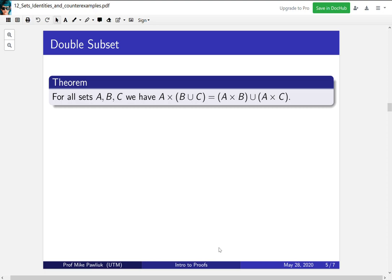Okay, enough with false ones, let's look at true ones. So let's see an example of a double subset proof of the following theorem. For all sets A, B, C we have that A × (B ∪ C) = (A × B) ∪ (A × C). So before we get into the proof of this, this theorem is saying that you can distribute the Cartesian product across unions.